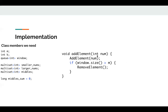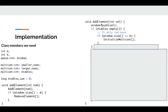Let's implement the addElement function. The addElement function is straightforward since I split it into two helper functions: one is addElementNum, which adds the element to my window and maintains the multi-sets. If the window size is greater than m, then we need to pop the old element and remove it.